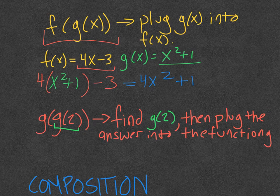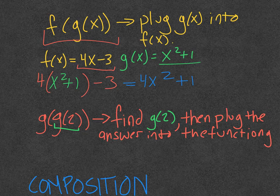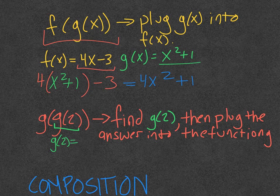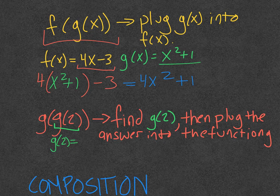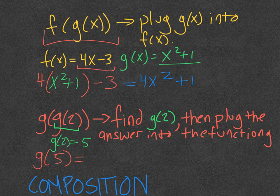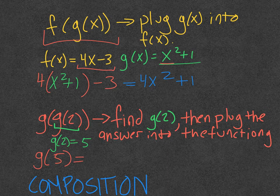We can also do this numerically. I'm going to find g of g of 2—that also gives you a hint that you can plug functions into themselves, and that's okay. What I'm going to do first is find g of 2. So g of 2, that's x squared plus 1, so it's 5. And then to find g of g of 2, I'm going to take that answer and plug it back in. So g of 5 would be 5 squared is 25 plus 1 is 26.